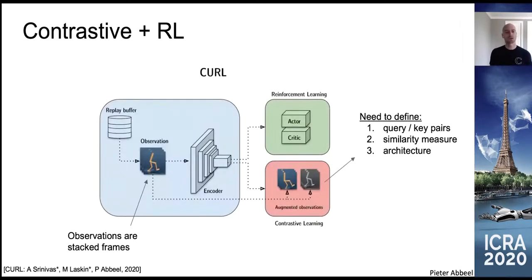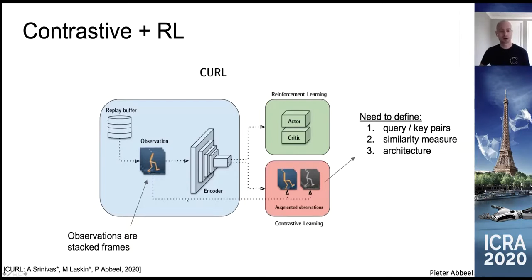How can we apply the same idea in reinforcement learning? In RL, our agent collects data and puts it into a replay buffer. Then, during learning, it takes data from the replay buffer, follows the encoding path, and goes into an actor network and critic network to do the RL updates — that's the top path. What we add in CURL is an extra path at the bottom, where we generate augmented observations, just like in SimCLR, and apply a contrastive loss on these augmented observations.